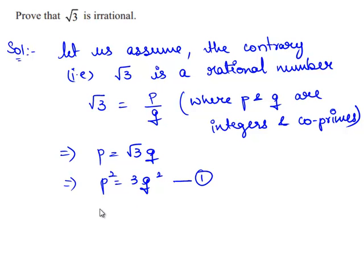So, this can be written as p square by 3 is equal to q square. So, from this expression, we see that 3 divides p square, which also implies that 3 divides p. Therefore, 3 is a factor of p.